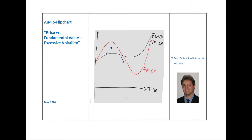I want to illustrate this phenomenon at the example of a stock. In this chart, we see on the horizontal axis the time — as we go to the right, time elapses. On the vertical axis, we see the fundamental value in black and the price in red. The price is what you can observe at the stock exchange — the amount you pay when buying the stock and the amount you get when selling it.